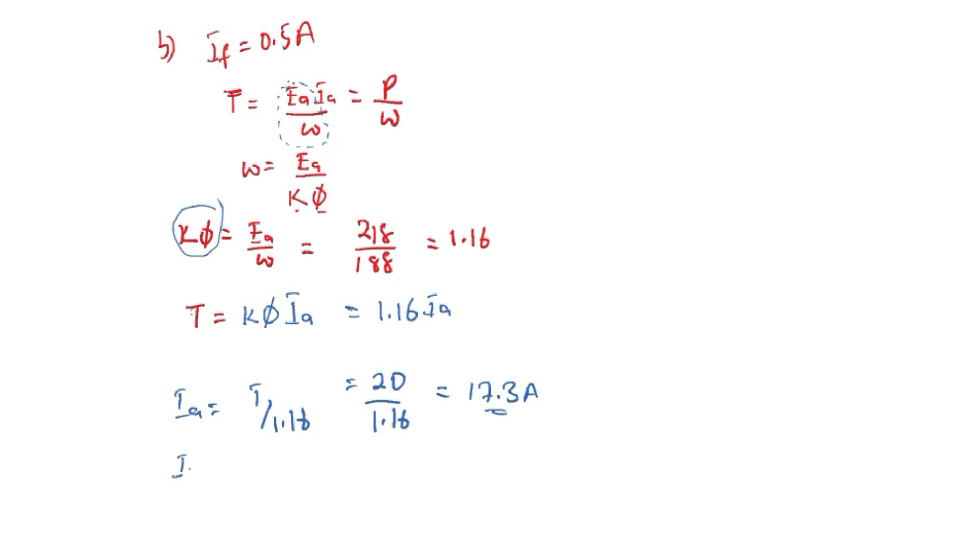Now since IF remains constant at 0.5 Ampere, it follows that IL is going to be IA plus IF, which is 17.3 plus 0.5. We are going to have 17.8 Ampere.